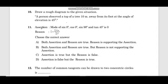Assertion: Mode of sin 0, cos 0, sin 90 and tan 45 is 0. Reason: Mean is sigma fi xi by sigma f. Determine if the assertion is correct or wrong.